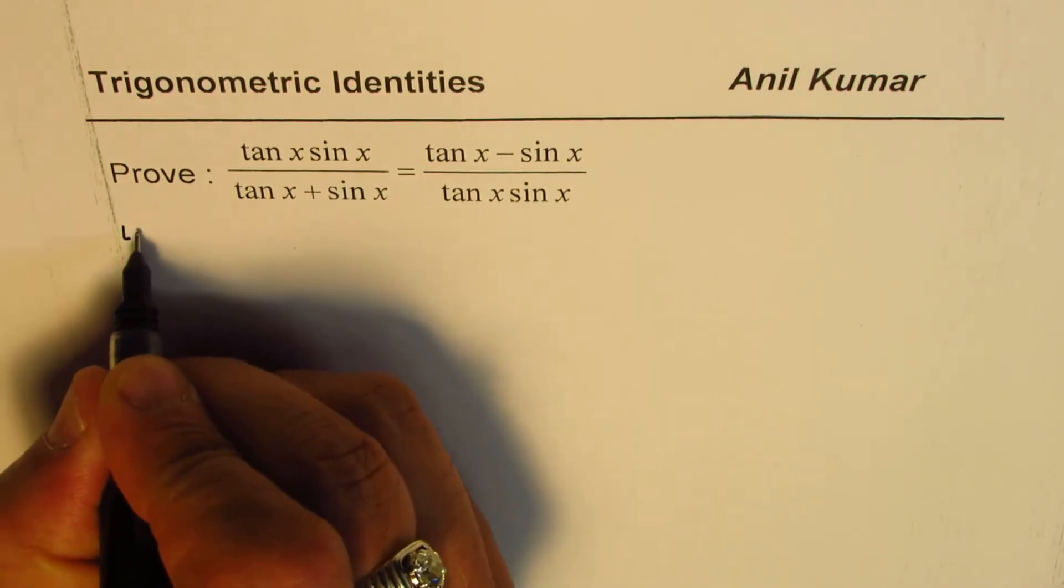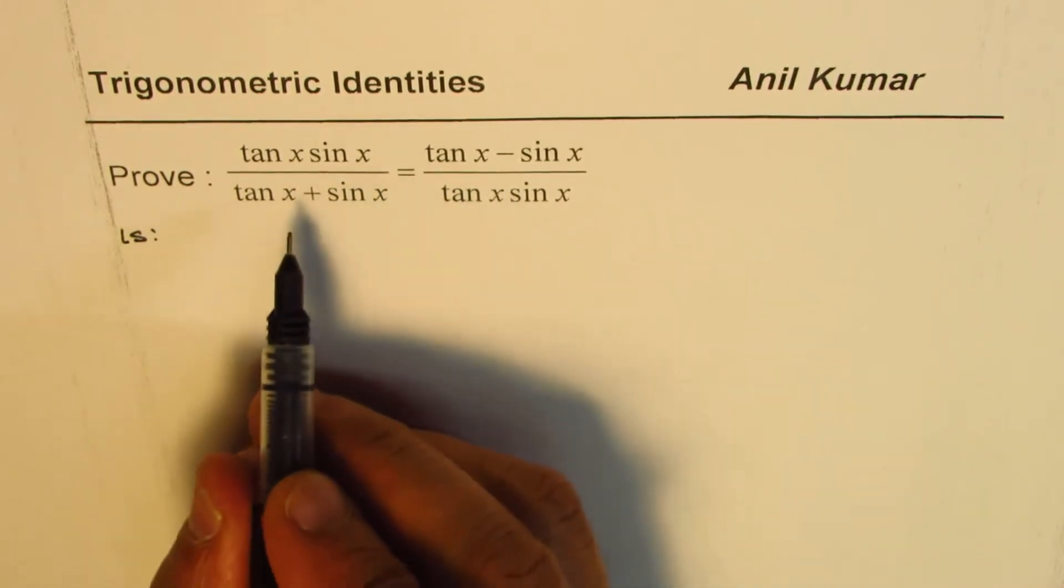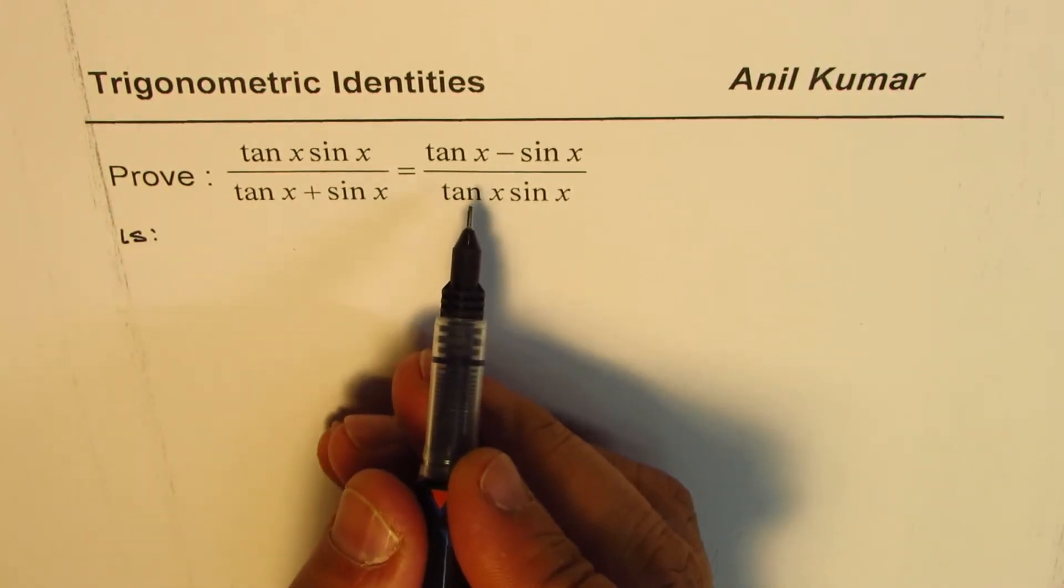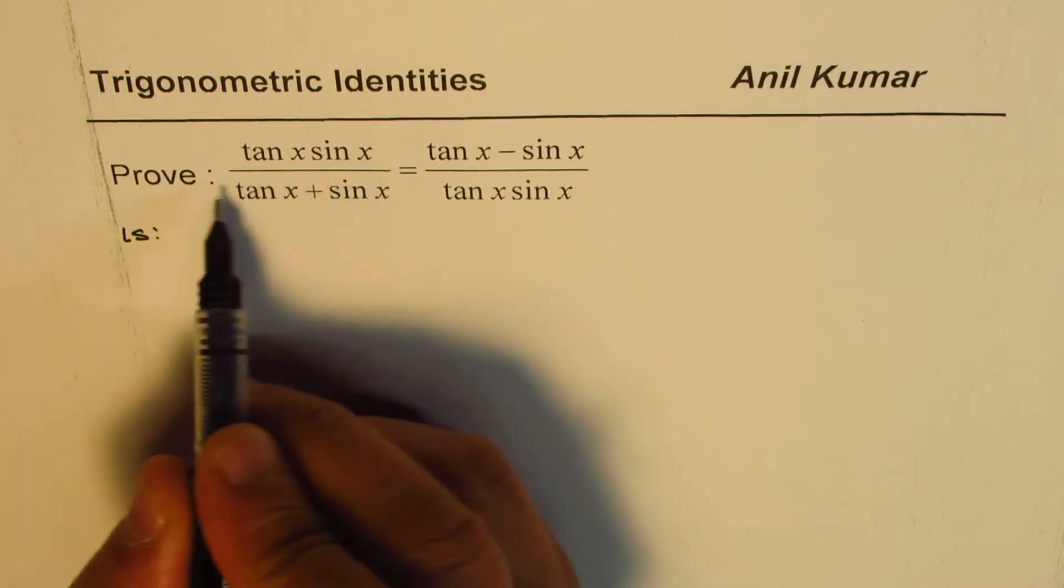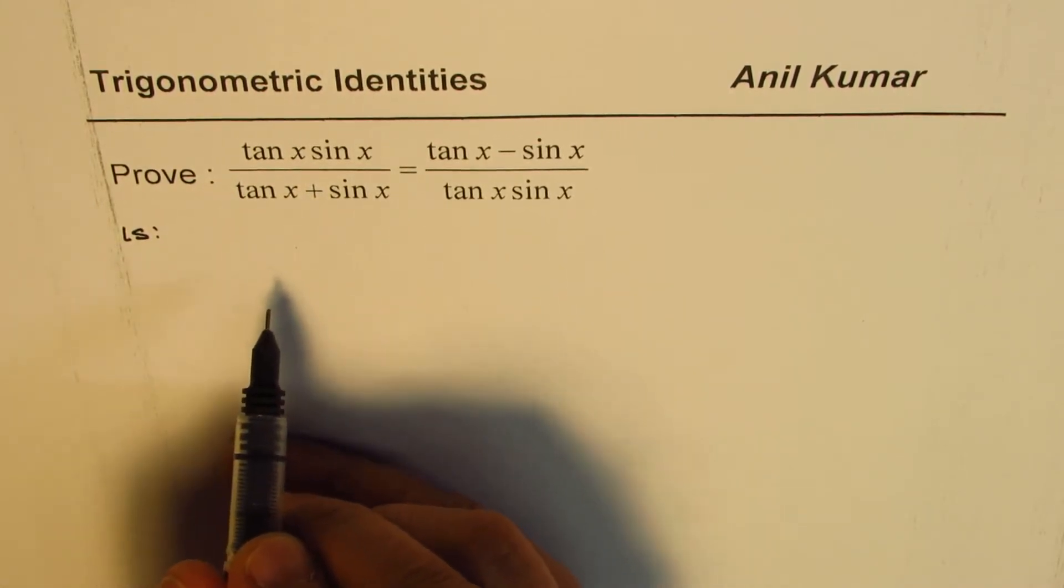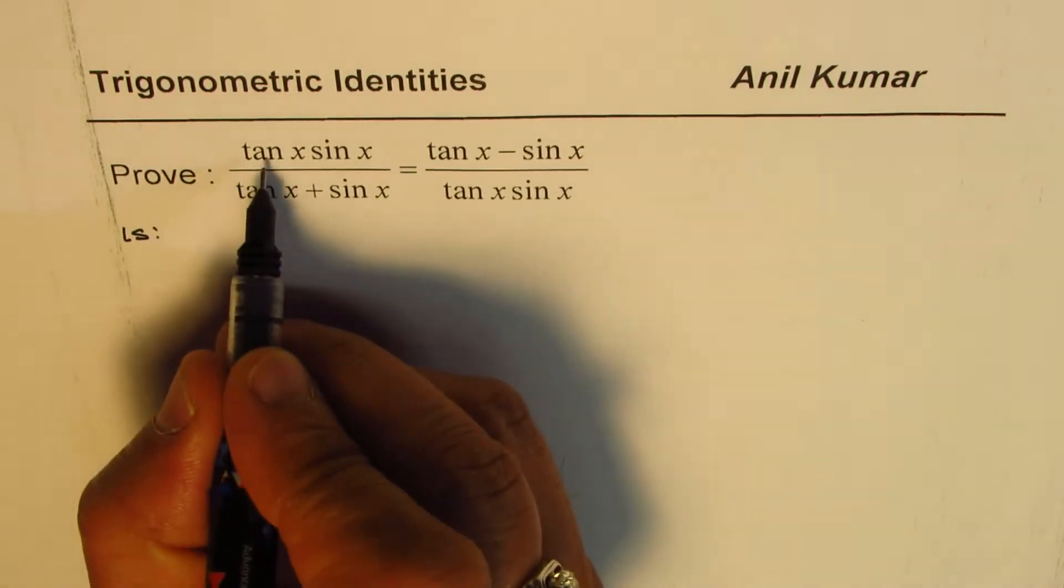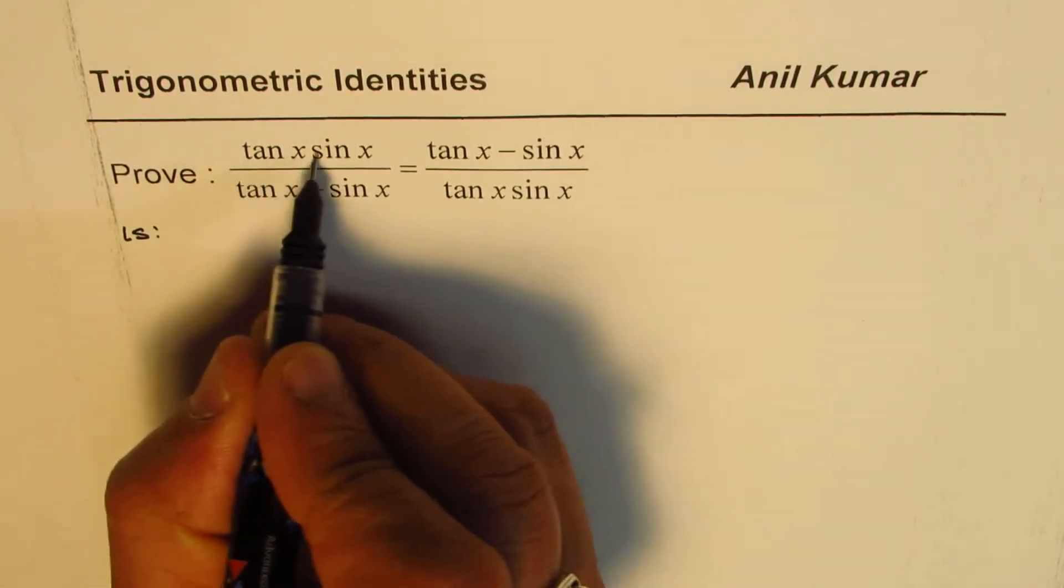I will do it from the very basics. Let's start from the left side. Both expressions are kind of similar, you could start from left side or right side. In this particular case, tan x sine x divided by tan x plus sine x.